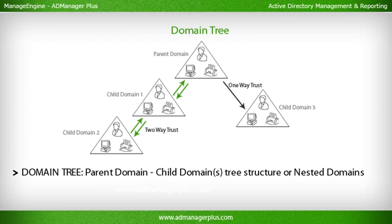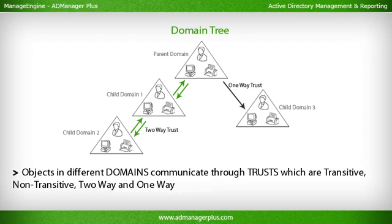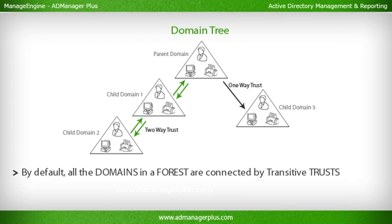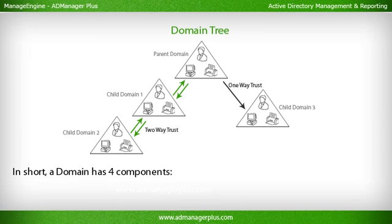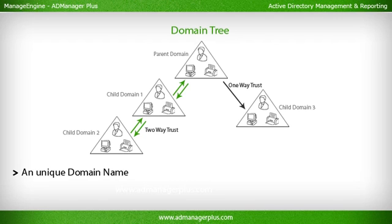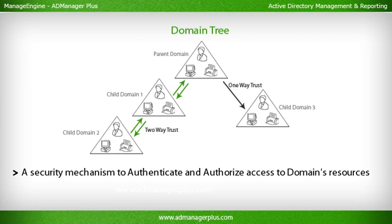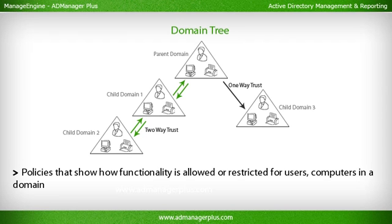A domain tree consists of a parent domain and child domains in a tree structure, or nested domains. Objects in different domains communicate through trusts, which are transitive, non-transitive, two-way, and one-way. By default, all domains in the forest are connected by transitive trusts. All domains in a domain tree share a contiguous namespace. In short, a domain has four components: a hierarchical structure of containers and objects, a unique domain name, a security mechanism to authenticate and authorize access to domain resources, and policies that control how functionality is allowed or restricted for users and computers in a domain.